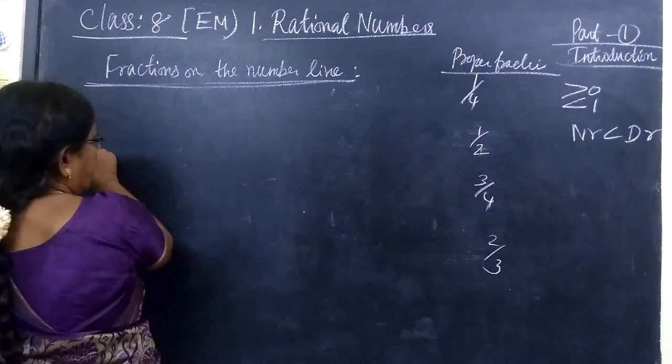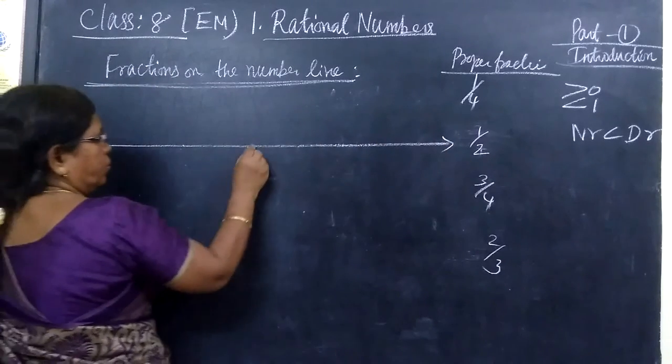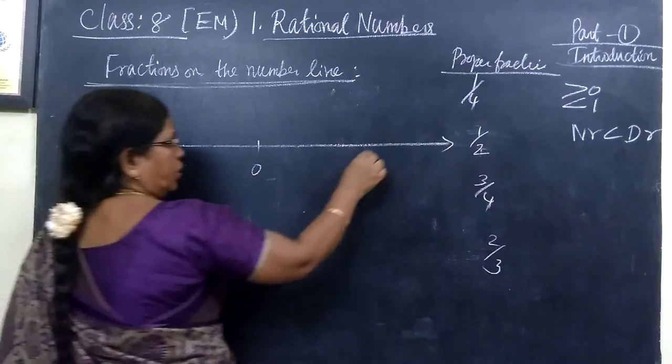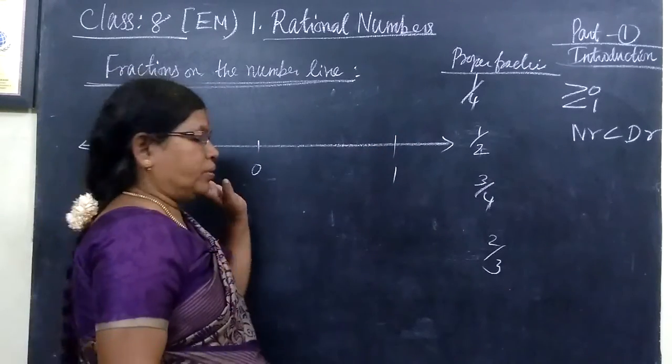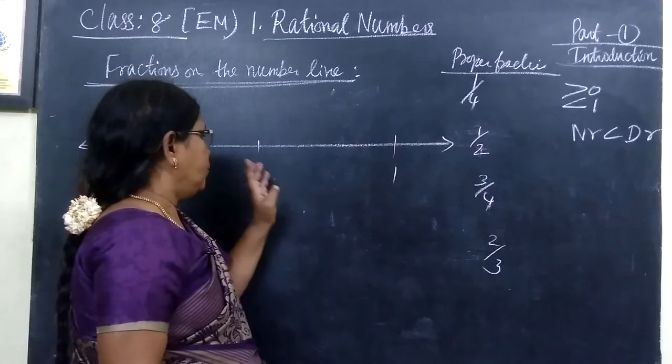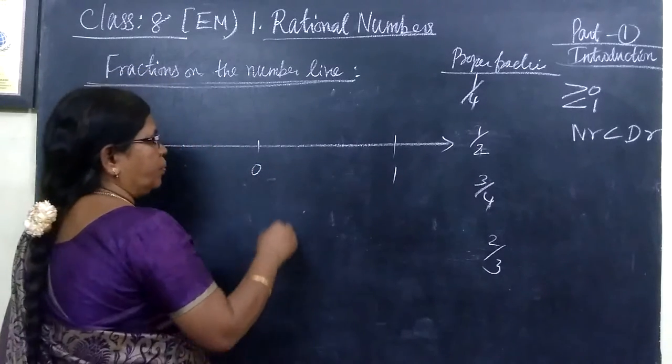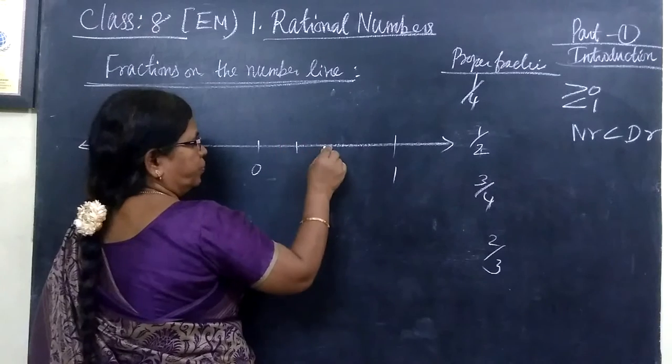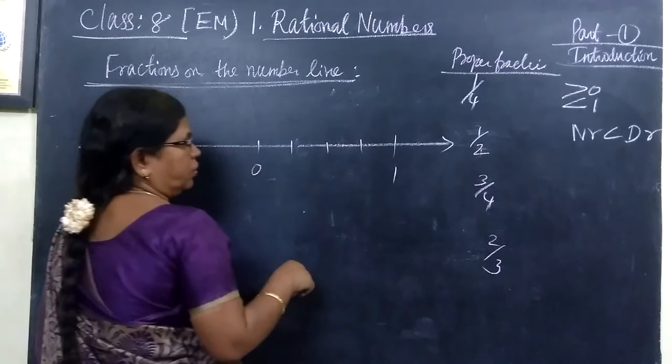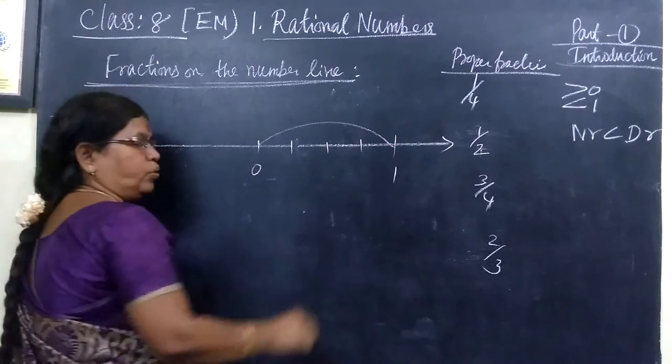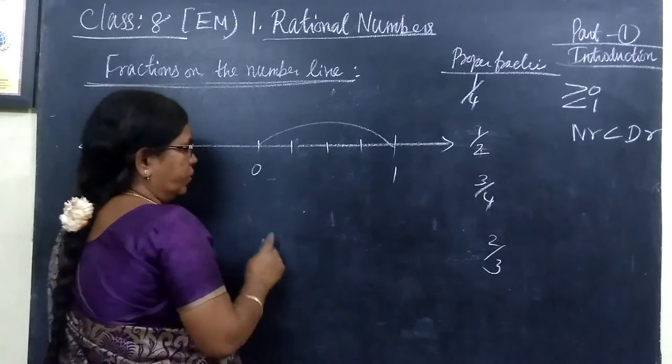We want to draw it on a number line. How to mark it on a number line. So you take 0 and you take 1. So I divide the distance between 0 to 1. We divide into 4 equal parts. So 1 then 2 then 3. So 0 to 1 distance. In the distance we divide into 4 equal parts.